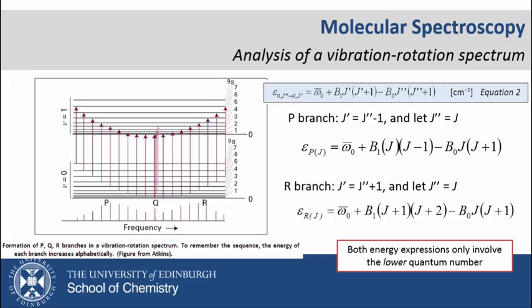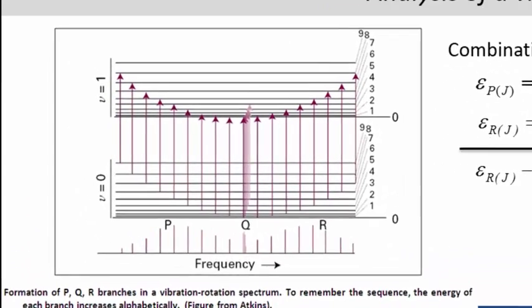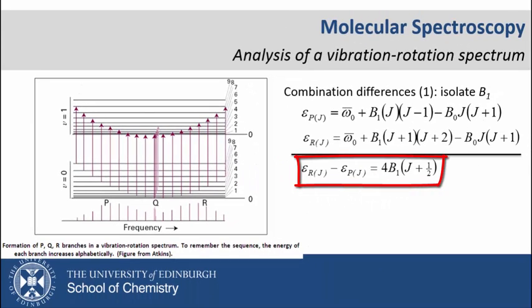We can produce information from the spectrum by combination differences, combining our expressions for P and R to eliminate one of the unknowns. If we combine these energies so that we subtract one from the other for a value of J in each case, what does this achieve? Well, if we look at the energy level diagram, we can see that the energy difference between two transitions that originate from the same V=0 rotational state differ in the V=1 vibrational state.